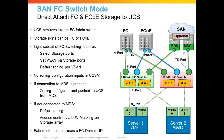When you convert to switch mode, the fabric interconnect behaves like a full fiber channel switch. It uses a fiber channel domain ID, processes fiber channel logins, and hands out FC IDs — just like any fiber channel switch. Therefore, you can connect storage directly to the UCS Fabric Interconnect. You simply pick some ports and define them as storage ports, which can be fiber channel or FCoE ports. When you define a storage port, you also define the vSAN that storage port belongs to, and it's one vSAN per storage port.